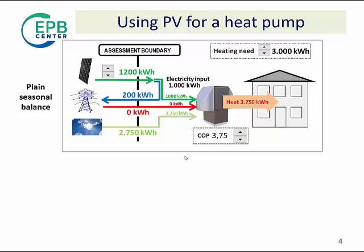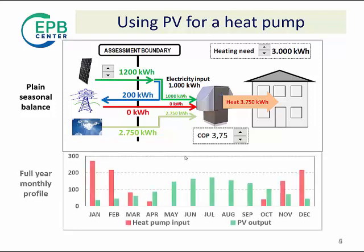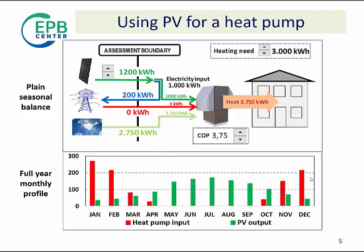If we have a closer look, we will discover that on a monthly basis, the trend of electricity input for the heat pump and of PV production are not the same. Heat pump input is in the winter months, whilst the PV production is mostly in summer.